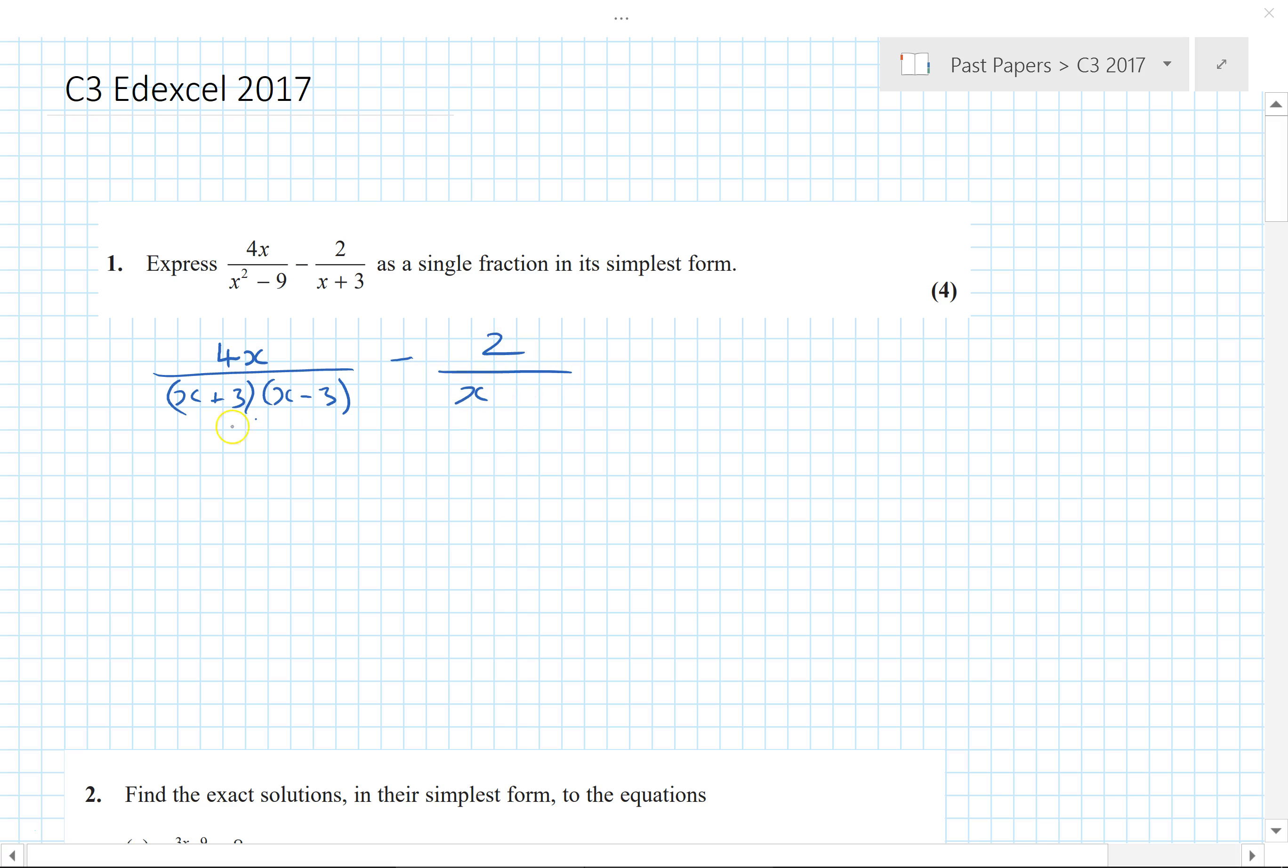Anyway, we factorize this using a bit of difference of two squares. Factorize the bottom. And now we're looking for the lowest common denominator. So if we multiply this on top and bottom by X plus 3, X minus 3, then we've got over a common denominator. So let's do that. X plus 3 times X minus 3, take away 2 over X plus 3 but times by X minus 3 to give that common denominator.